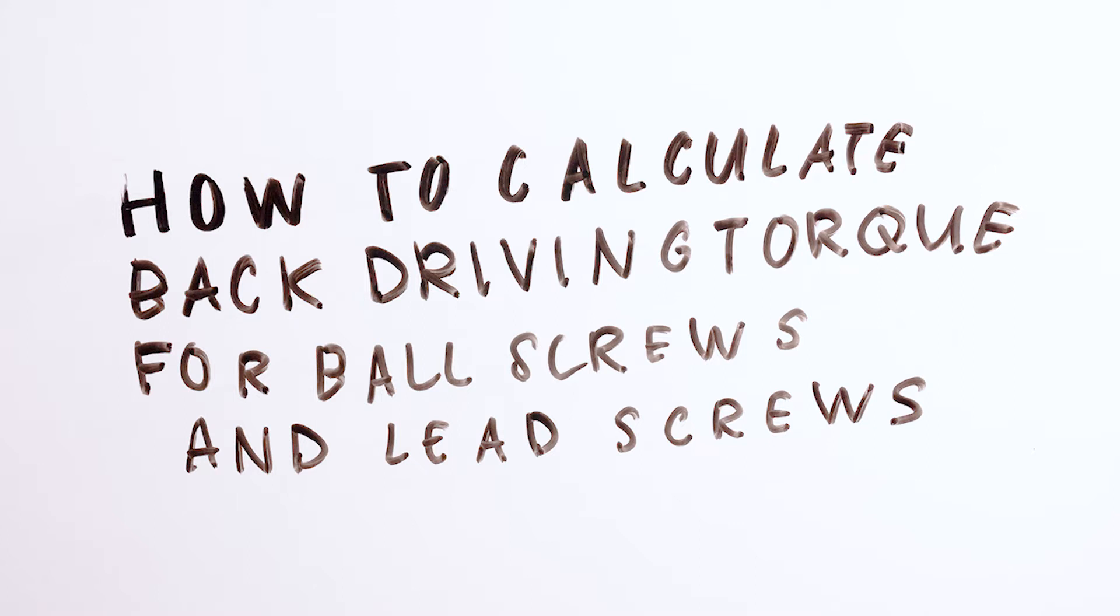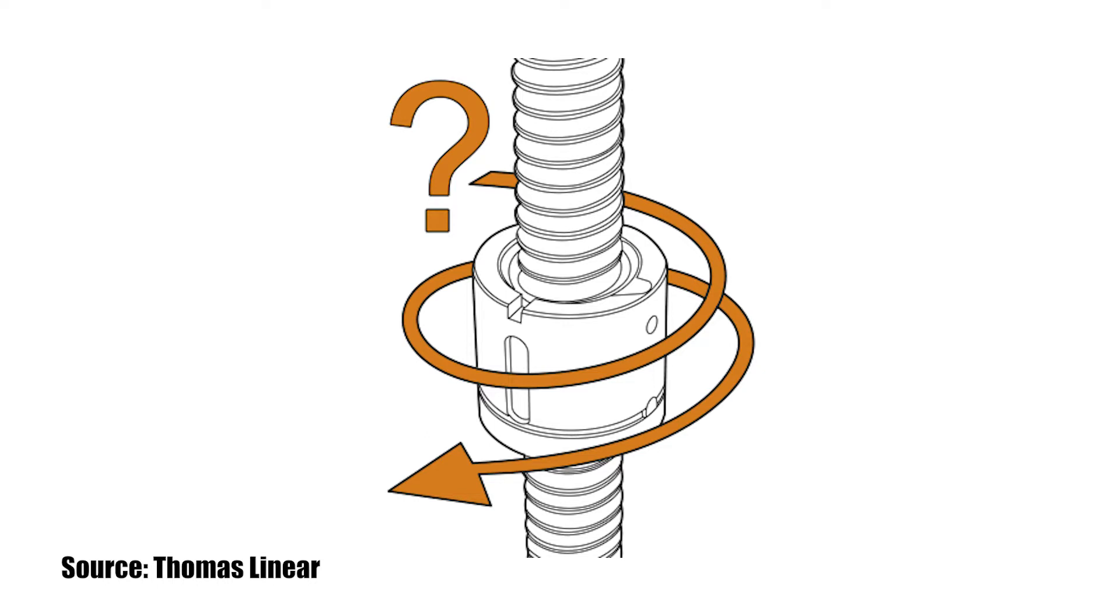Ball screws and lead screws are typically used for converting rotary motion to linear motion, but when a load is applied axially to the nut, they do the opposite and convert linear motion to rotary motion, causing the screw to turn. This phenomenon is known as backdriving, and it's typically an undesirable effect of axial loading.